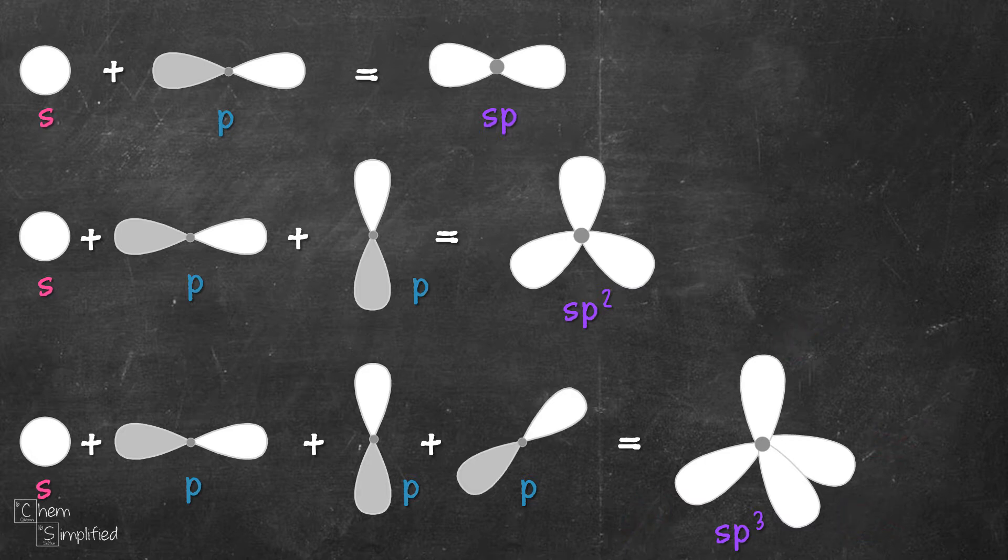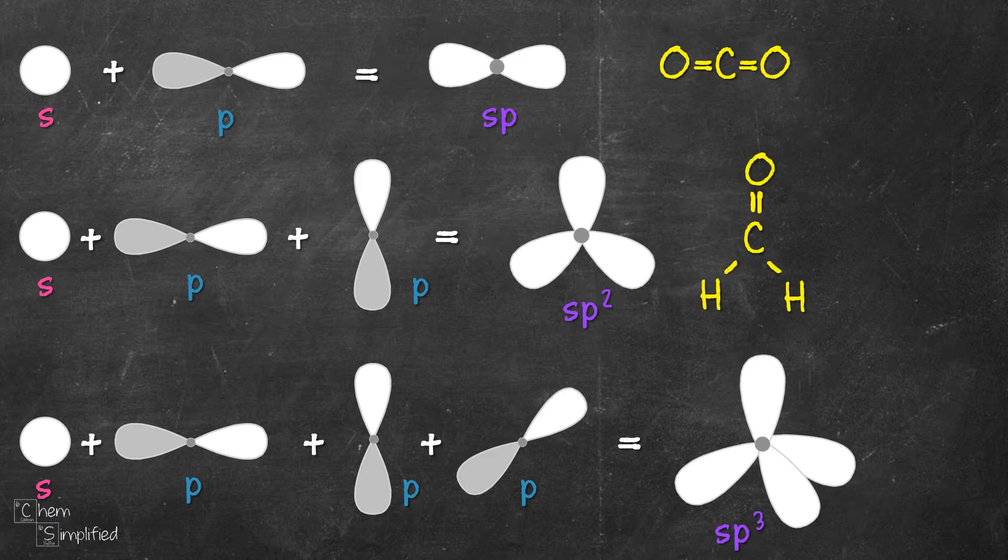sp, sp2 and sp3 orbitals are said to be hybridized since they are a hybrid of s and p orbitals. Example of compound that contains sp hybridized orbital is the carbon in carbon dioxide. And for sp2, it's the carbon in formaldehyde. And in sp3, it's the carbon in methane.